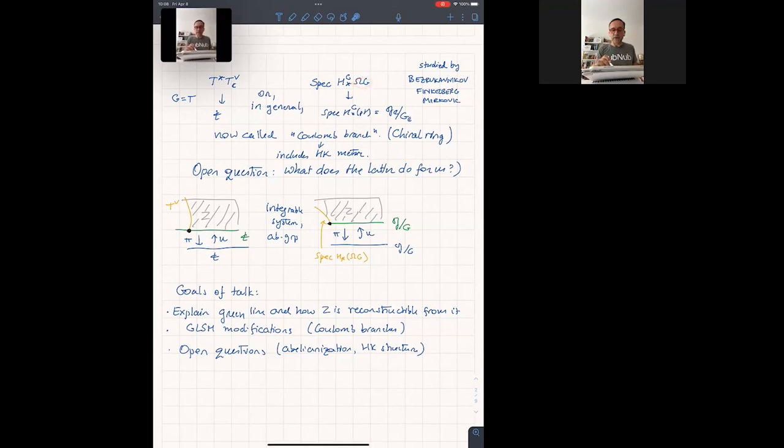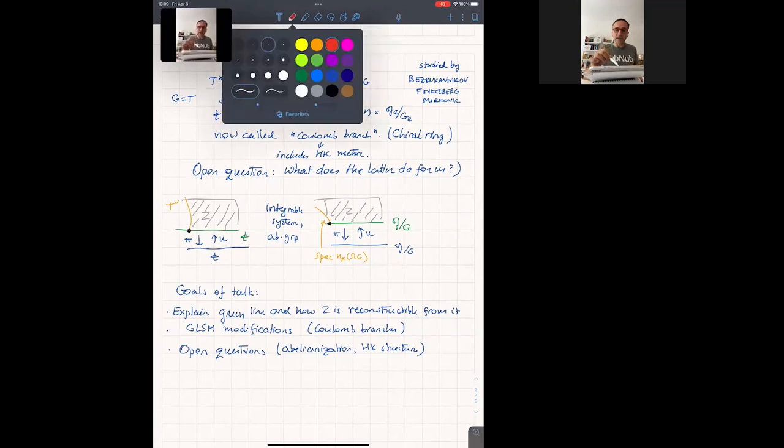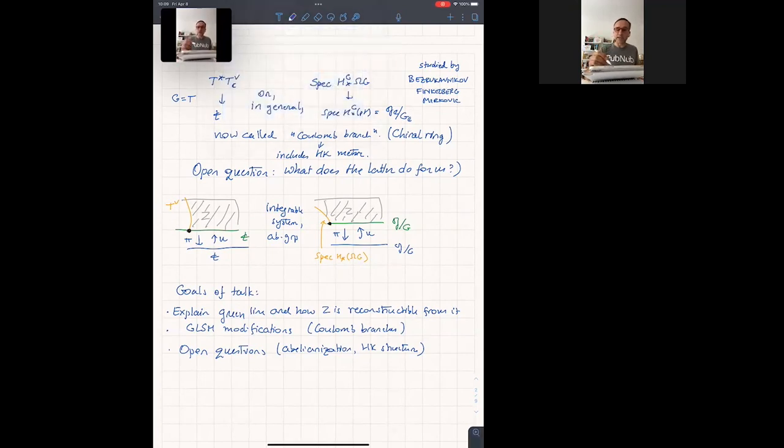And it has, of course, projects to the equivariant homology of a point, which are the adjoint orbits in the Lie algebra. And they show that some algebraic symplectic manifold, and this projection defines, again, an integrable system and an abelian group structure. And in fact, what used to be called the Toda system embeds an open dense subset inside.